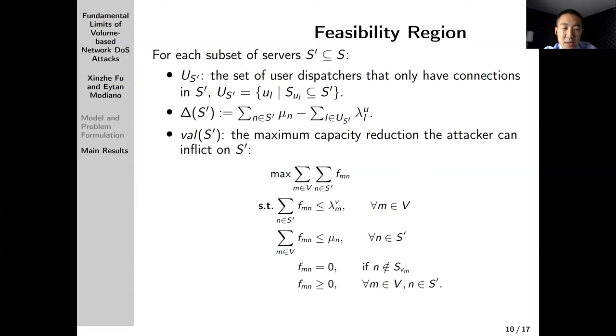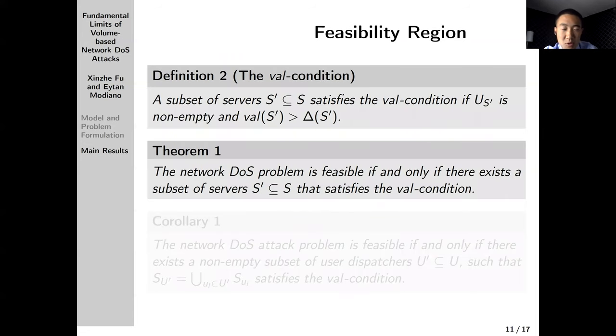Based on these definitions, intuitively it should be clear that we can characterize the feasibility region in the following way. If there is a subset of servers S' such that some user dispatcher or user traffic is trapped in it, and the maximum damage that the adversary can do to this subset is greater than the capacity margin, then by injecting according to the solution to the linear program, the adversary can successfully trap the user traffic. This is indeed correct.